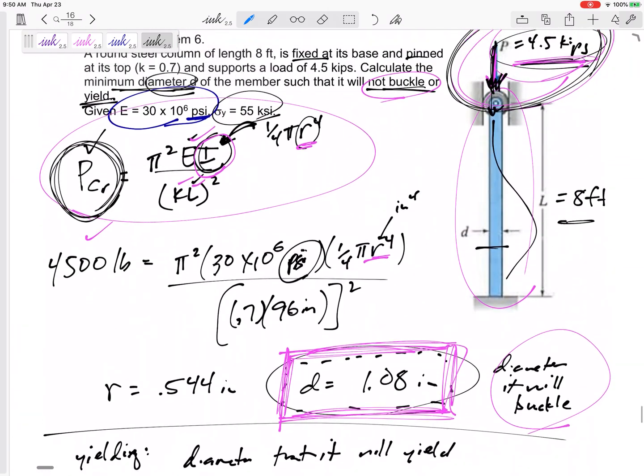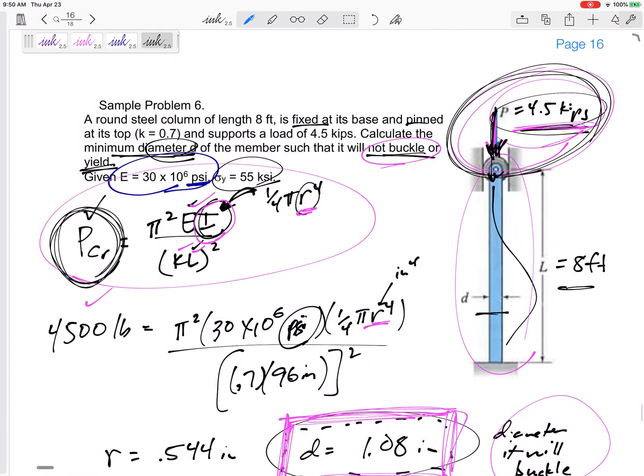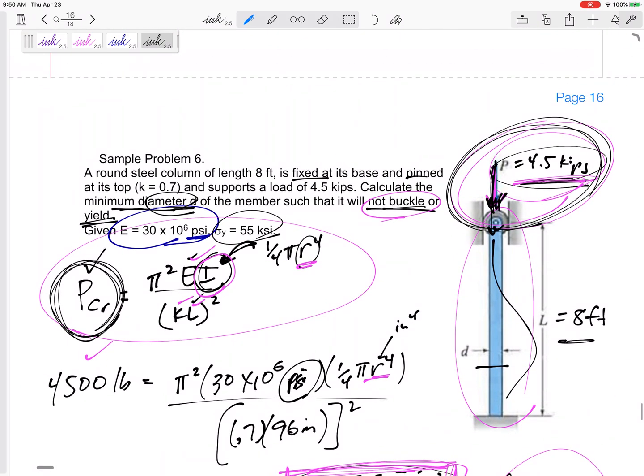Then the other thing, just go back and look at those strong and weak axes. This one was a circle, so there was no strong or weak axis, but if it is a rectangle with a base and height...